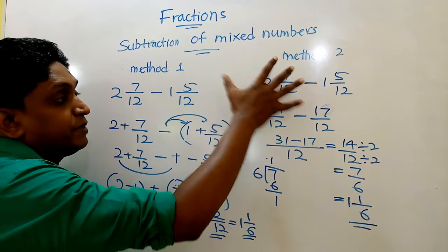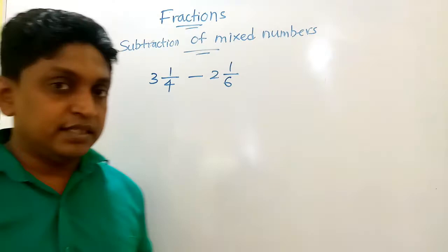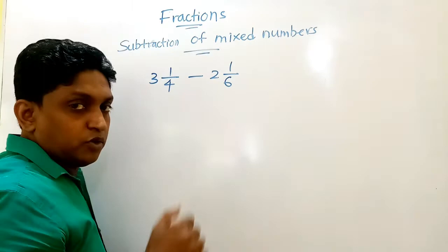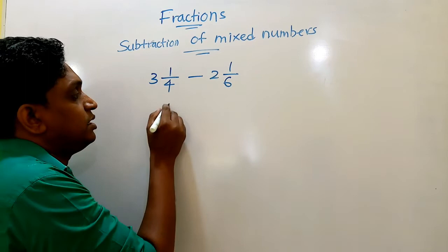So let's see now with different denominators. Subtracted mixed numbers with different denominators. Here I use the second method only for it. I have taken this example. You can see now 4, 6. Then the method I told you, the second method. Second method means convert these to improper. 4 into 3, 12, 12 and 1, 13 over 4. Minus 6 into 2, 12, 12 and 1, 13 over 6.